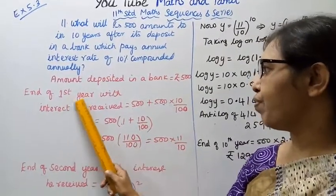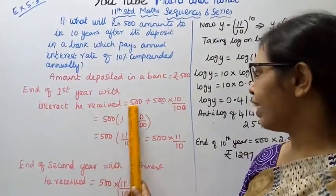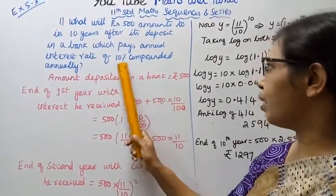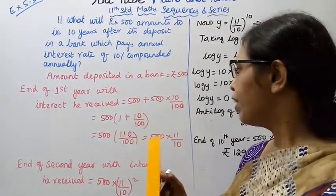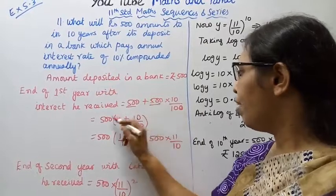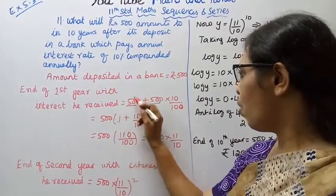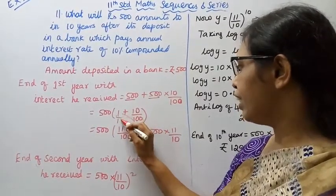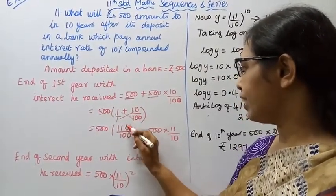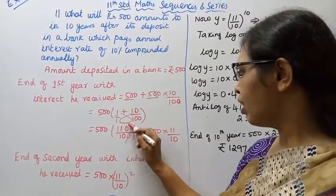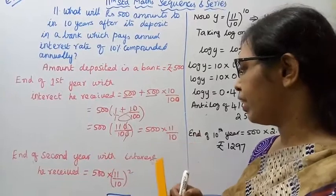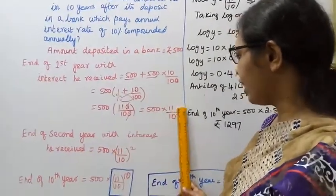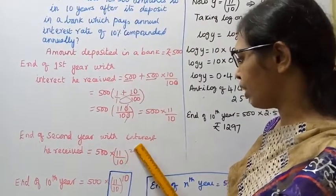At the end of the first year with interest, the series becomes 500 plus 500 into 10 by 100. Taking 500 as common: 500 into (1 + 10/100), which gives 500 into 110/100, simplifying to 500 into 11/10. At the end of the second year with interest, the series becomes 500 into (11/10) squared — that is, 500 multiplied by (11/10) whole squared.